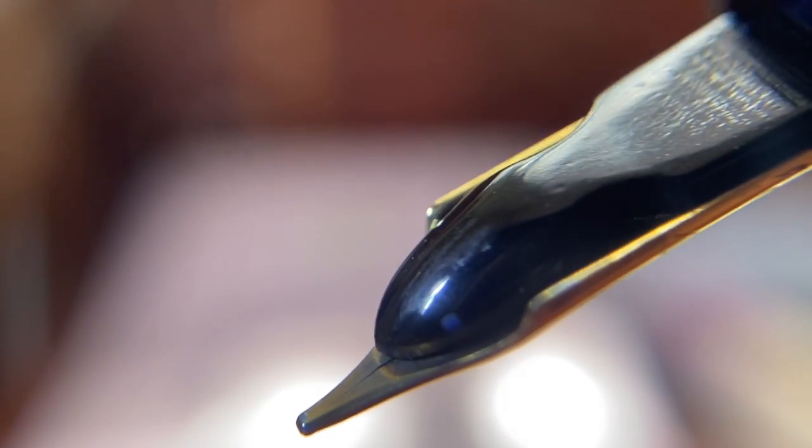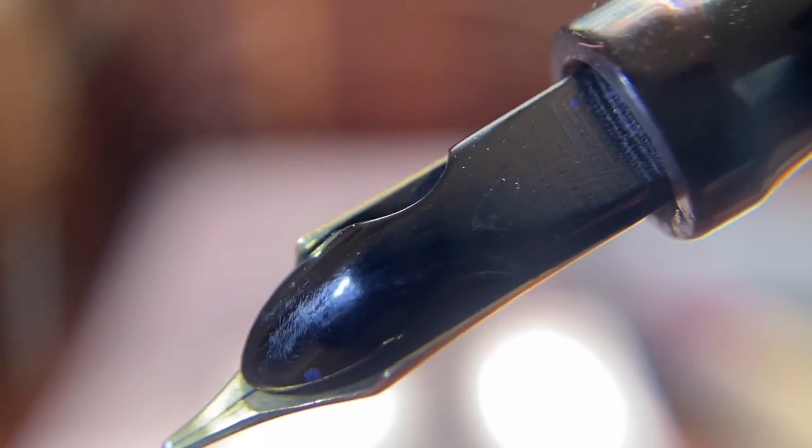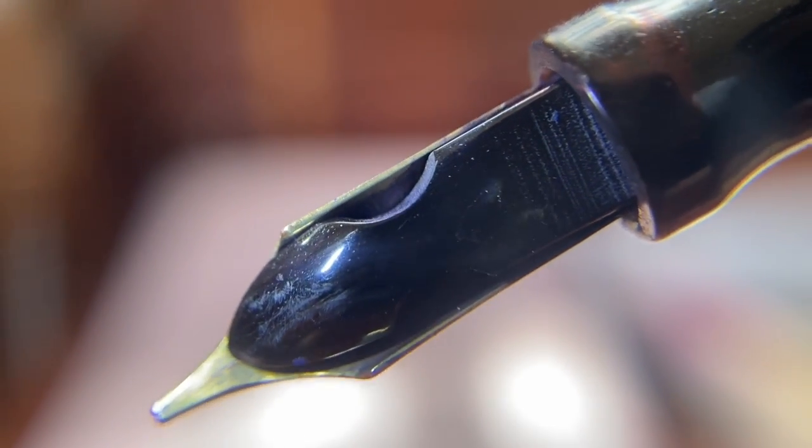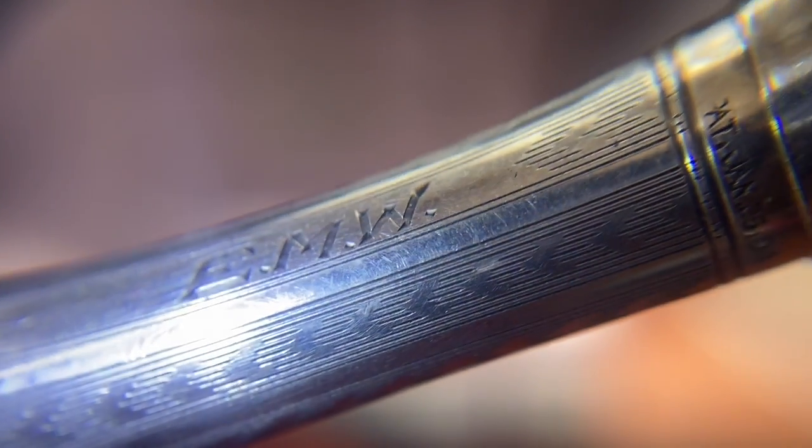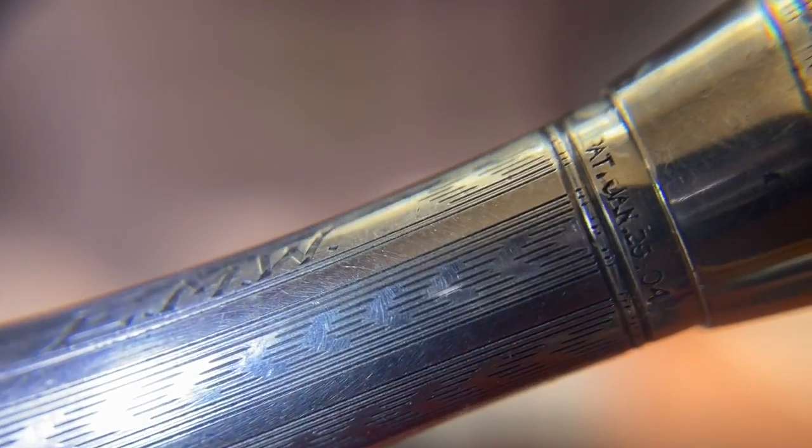This is that same pen, but you can see how porous the ebonite feed is. And in fact, you can see on the grip section, which is also ebonite, a little bit of the porous nature of the material.